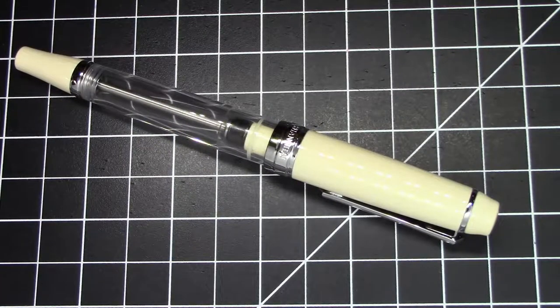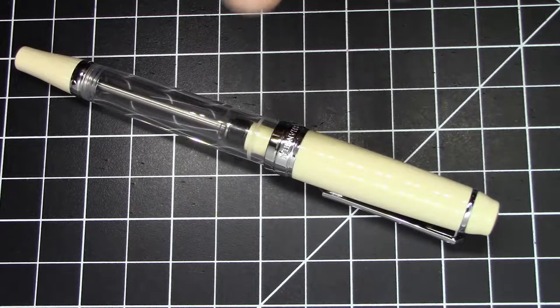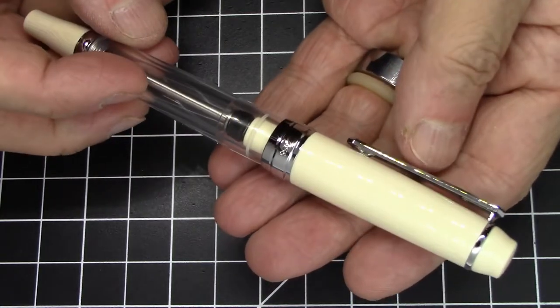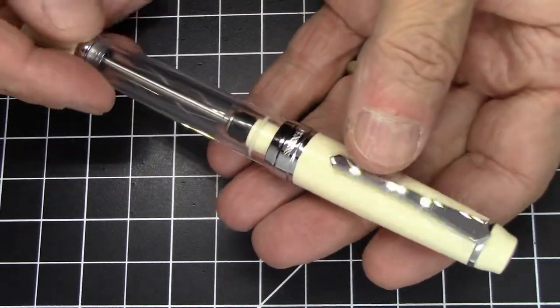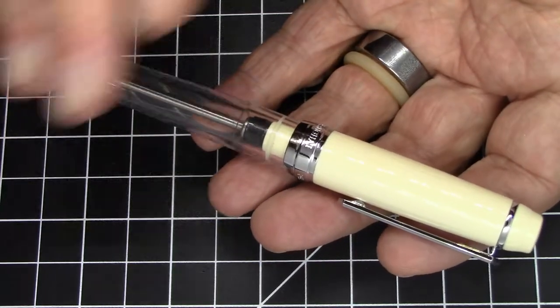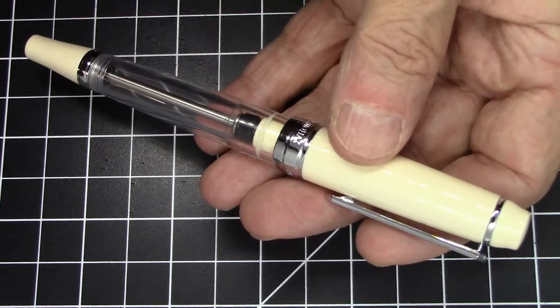Greetings pen pals, I have a pen today that is not new. I've done this pen on several videos before, but not this exact model because this is a new color and finish, at least new to me. I think it's been on the market for a little while. So of course this is a PenBBS 456, which is one of my absolute favorite pens. It's their vacuum filling pen. We'll go into details about the filling mechanism in a moment.